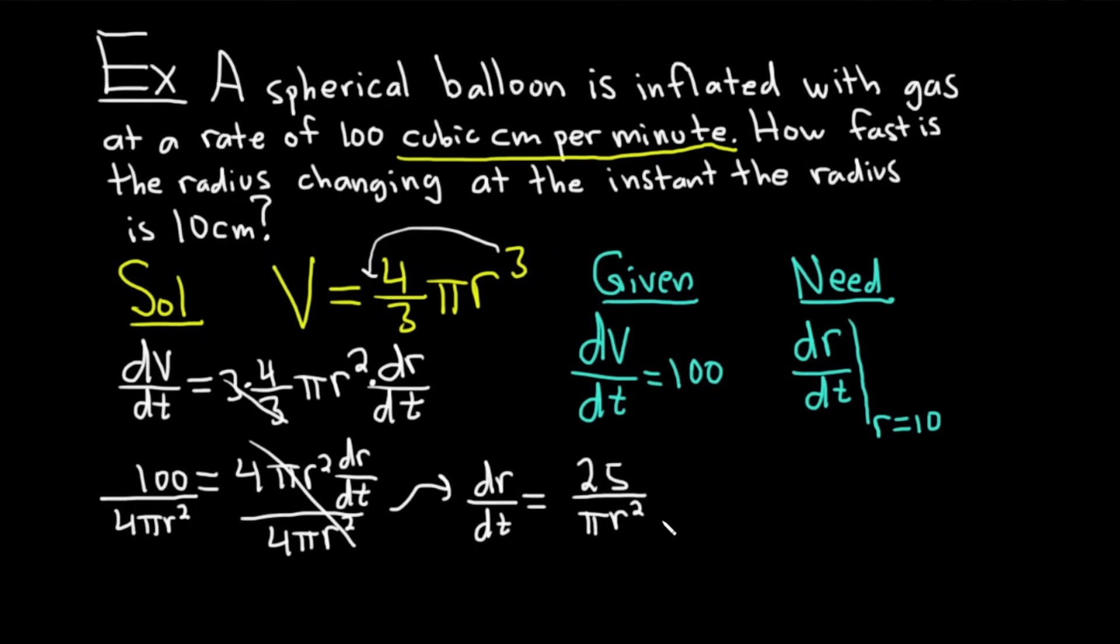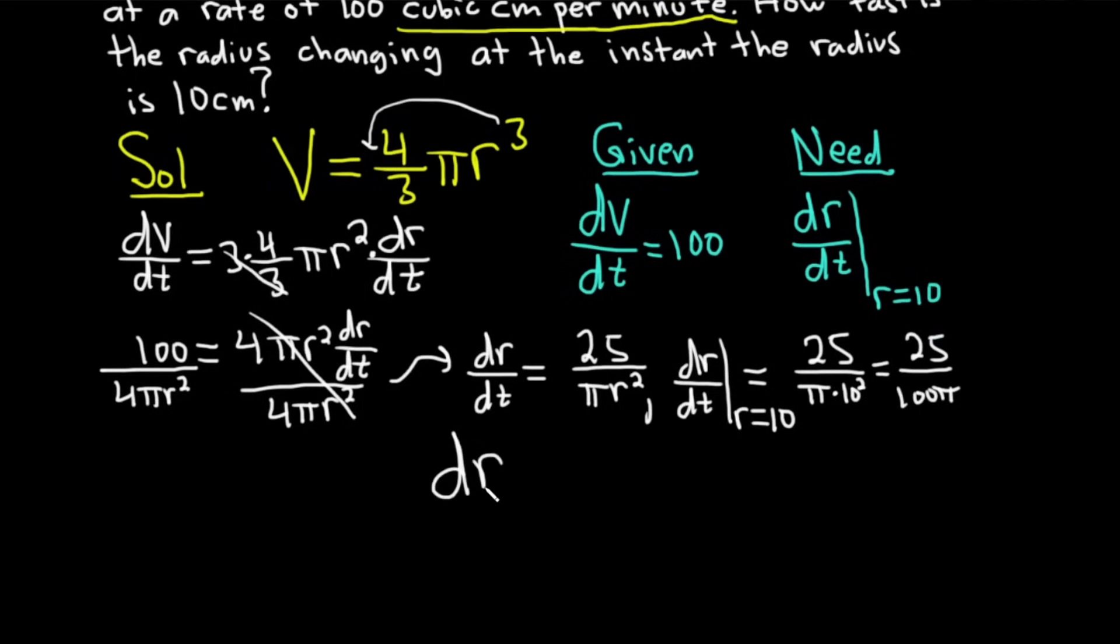So we have dr/dt at the instant in time when r is equal to 10. That's equal to 25 over π times 10 squared. That's equal to 25 over 100π. I'm going to write it again down here, a little bit bigger. So dr/dt is equal to 25 over 100π. Which simplifies to 1 over 4π.